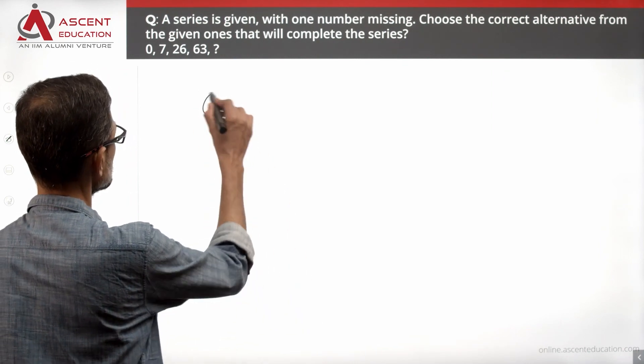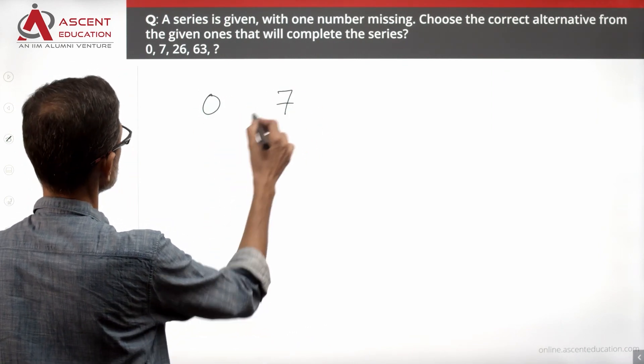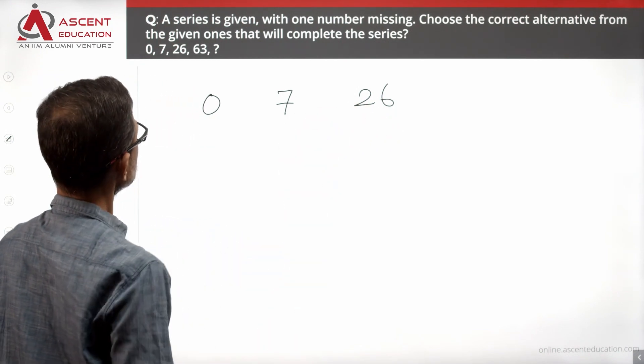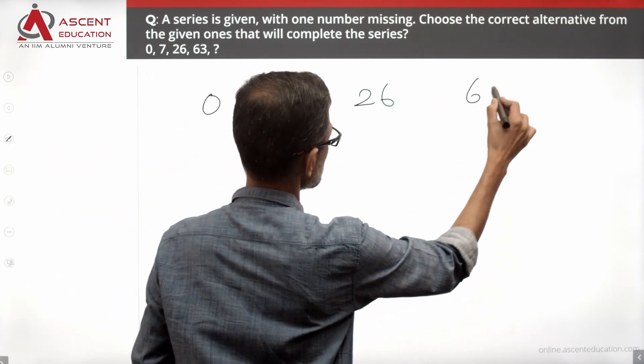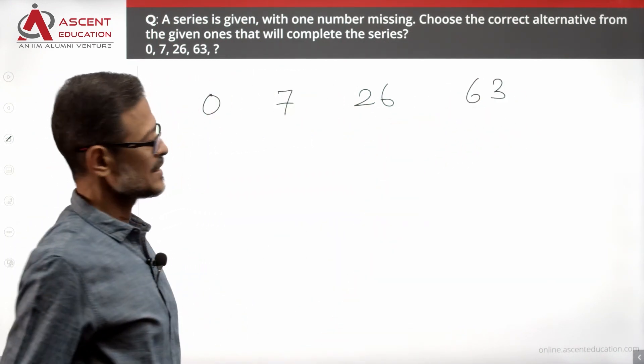The series is 0, 7, 26, 63. Looking at the differences: the difference is 7, then 19, then 37.